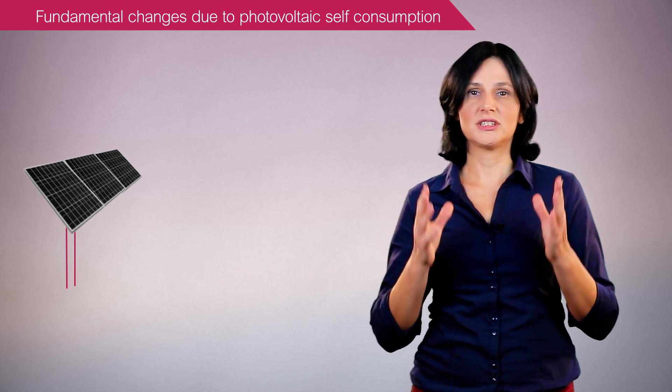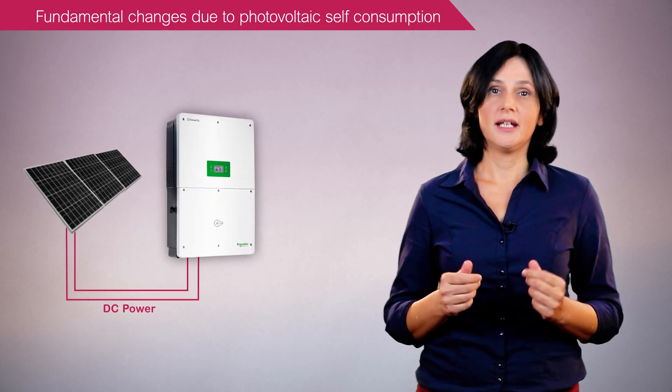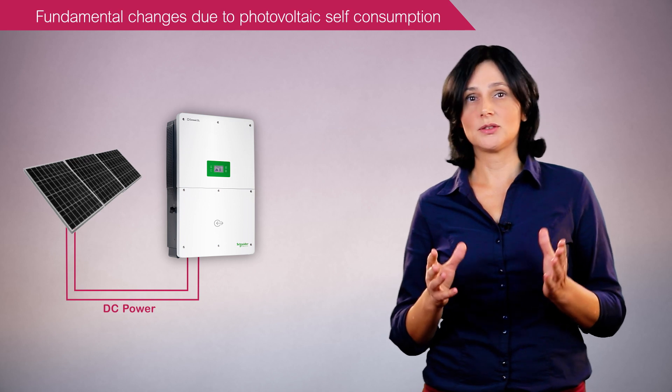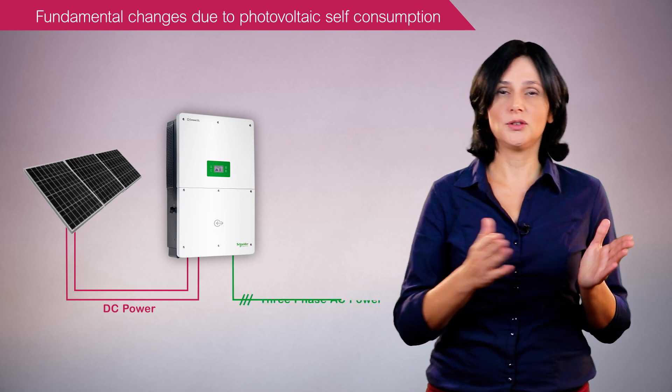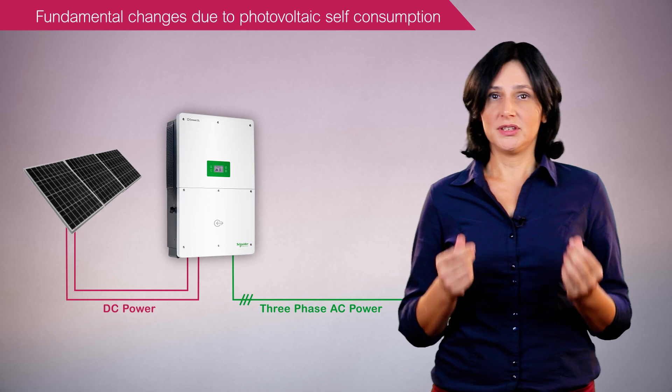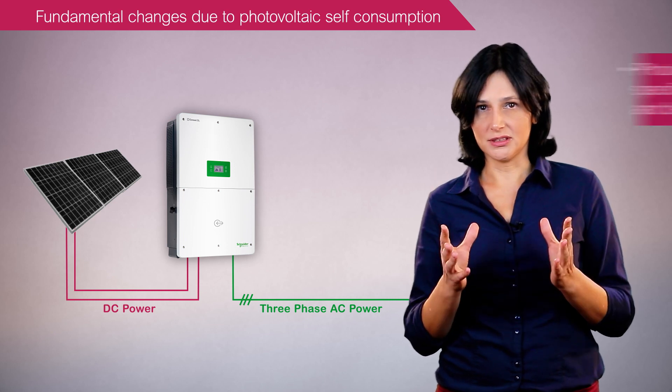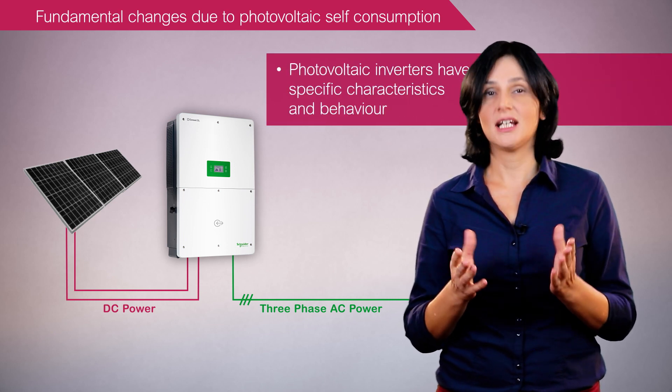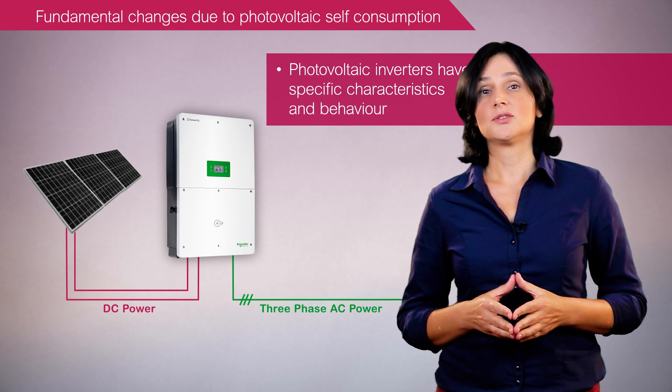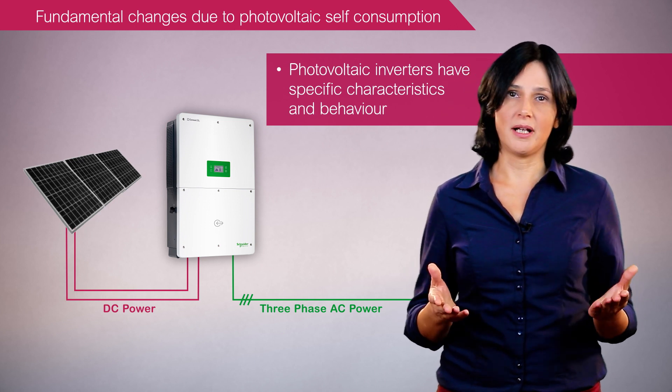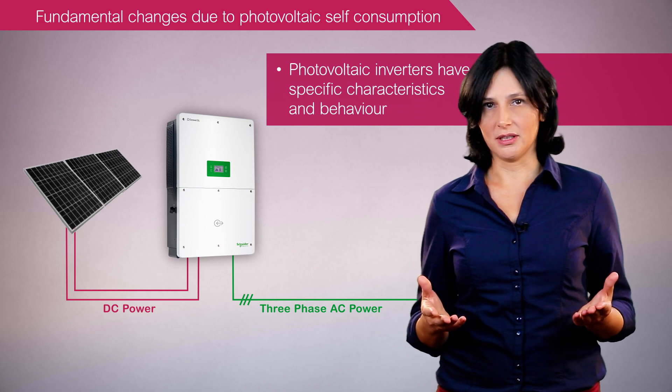Third, the photovoltaic panels produce a direct current output and use power inverters to convert the DC output into AC. For this reason, photovoltaic sources have different characteristics and behavior compared to traditional sources, such as the grid supply or electricity generators.